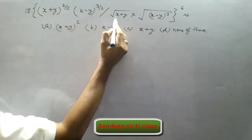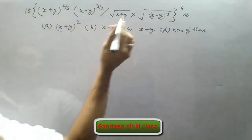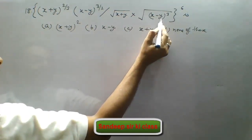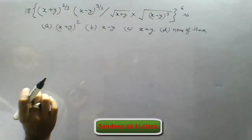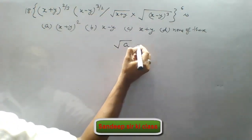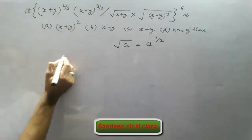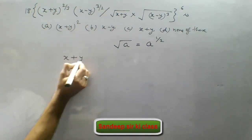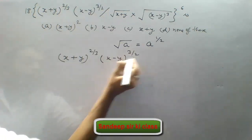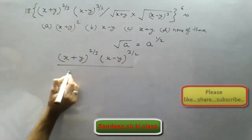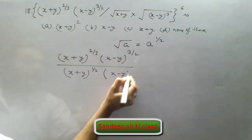Now see the denominator: x plus y under root. Under root is the power 1 upon 2, and similarly here also we can write x minus y cubed under root. So in place of under root we will write the power as 1 upon 2, because under root a is equal to a to the power 1 upon 2. So we have the numerator as x plus y to the power 2 by 3 into x minus y to the power 3 upon 2, and denominator as x plus y to the power 1 upon 2 into x minus y to the power 3 upon 2.